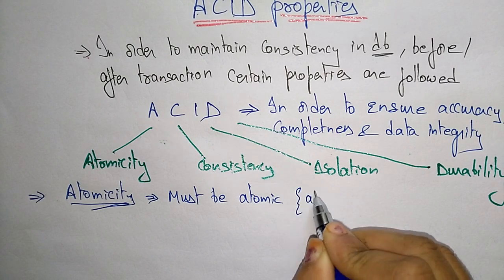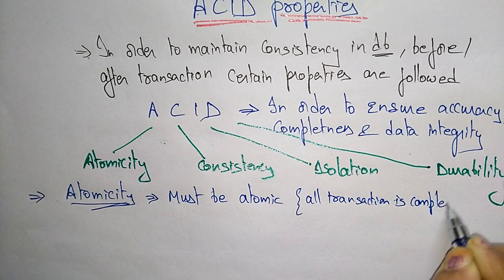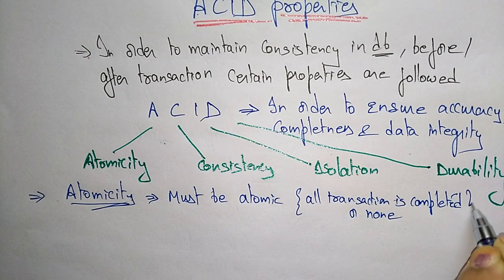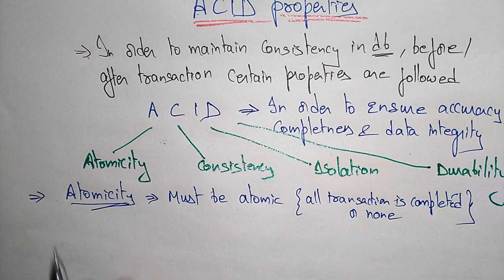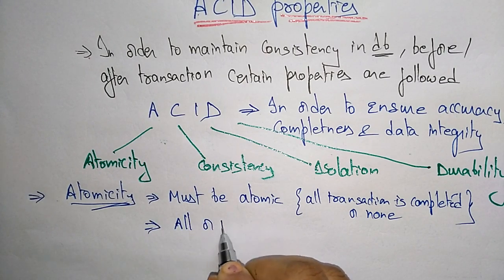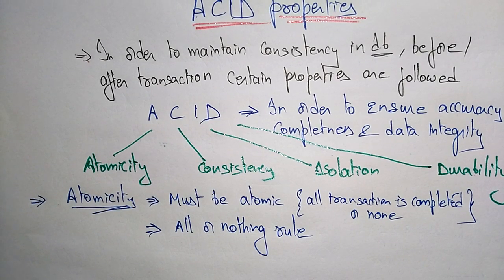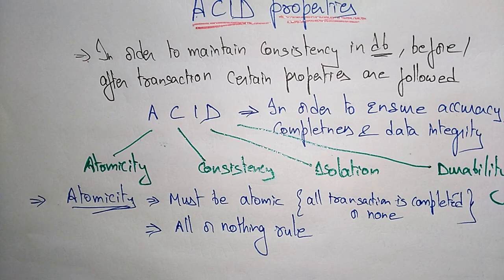Atomic means either all of its operations are executed or none of them are. All transactions should be completed, or nothing is done and the database remains unchanged. Atomicity is also called the 'all or nothing' rule. If one part of a transaction fails, the entire transaction fails.